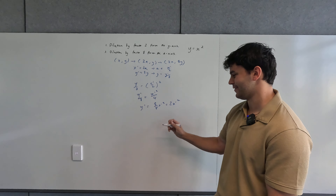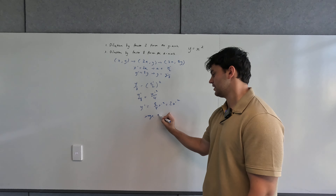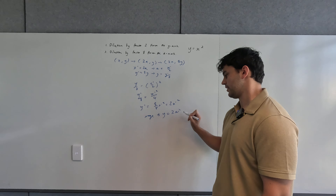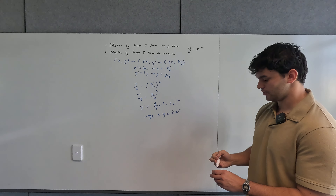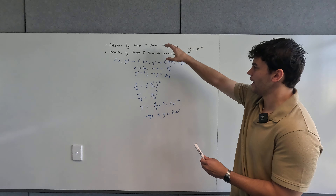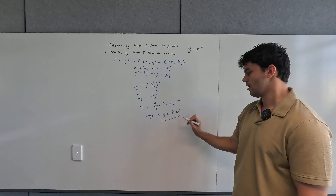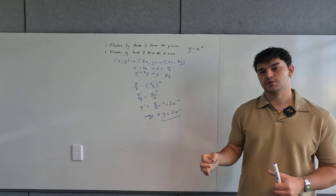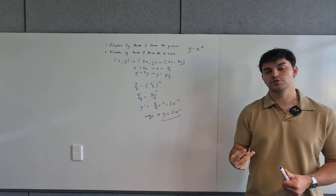So we can do them all at once. We multiply our x-value by two, giving us (2x, y). Then in the second step, we apply the dilation by a factor of eight from the x-axis, which multiplies our y-value by eight. Therefore, x' = 2x and y' = 8y, which means x = x'/2 and y = y'/8. We then substitute these expressions into our equation, just like usual.